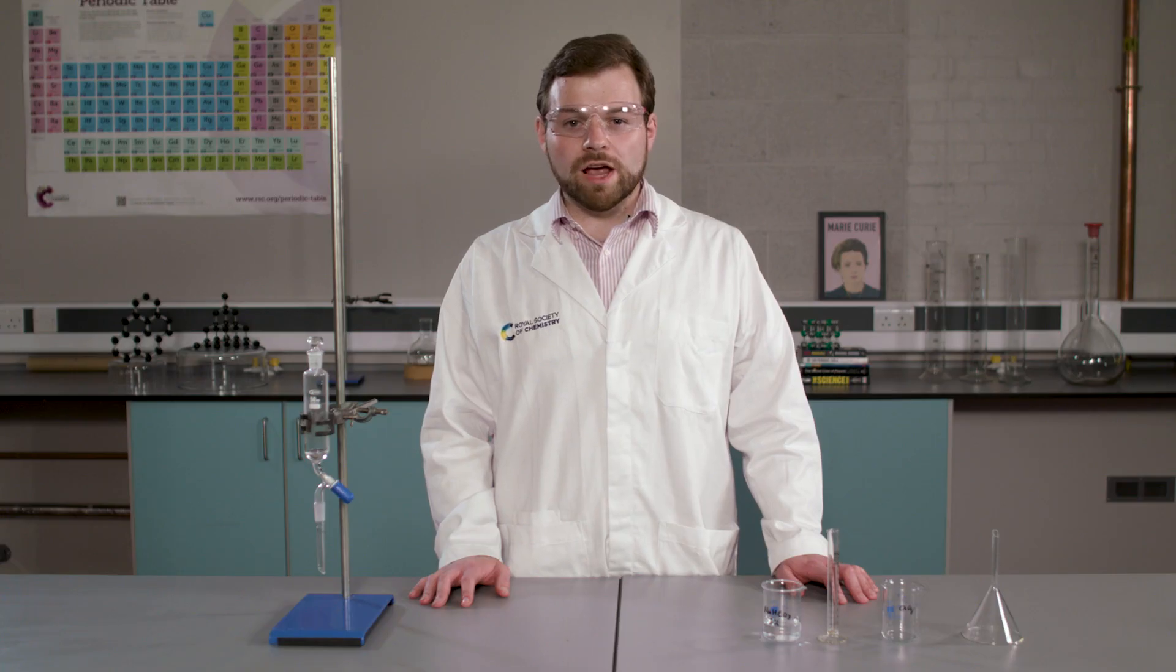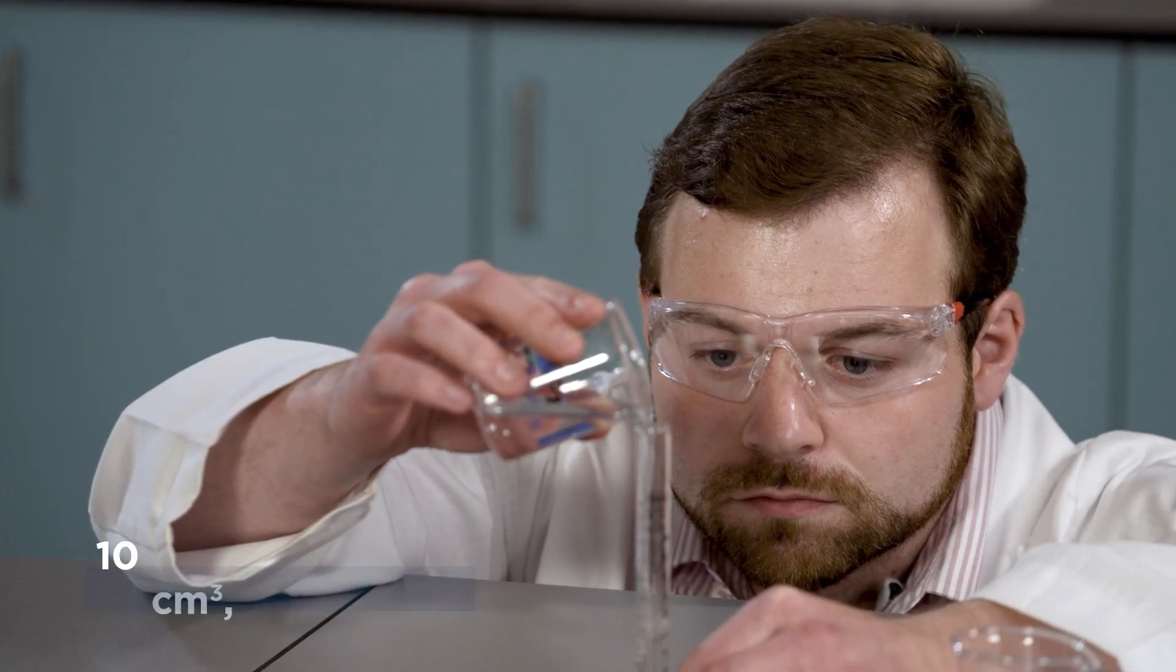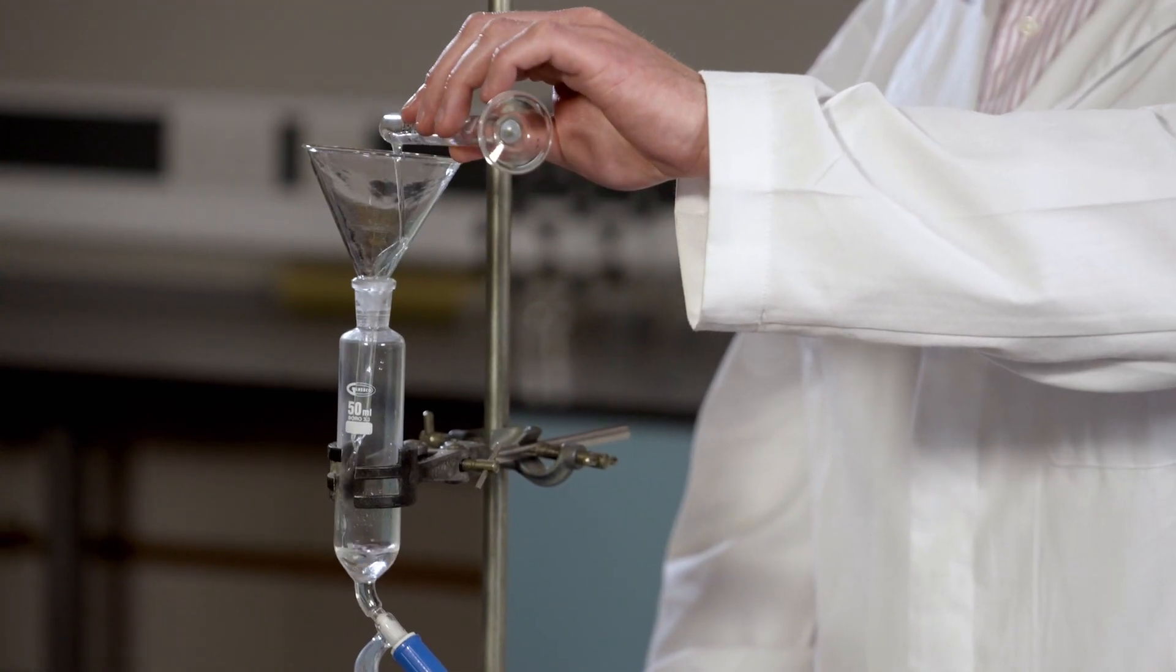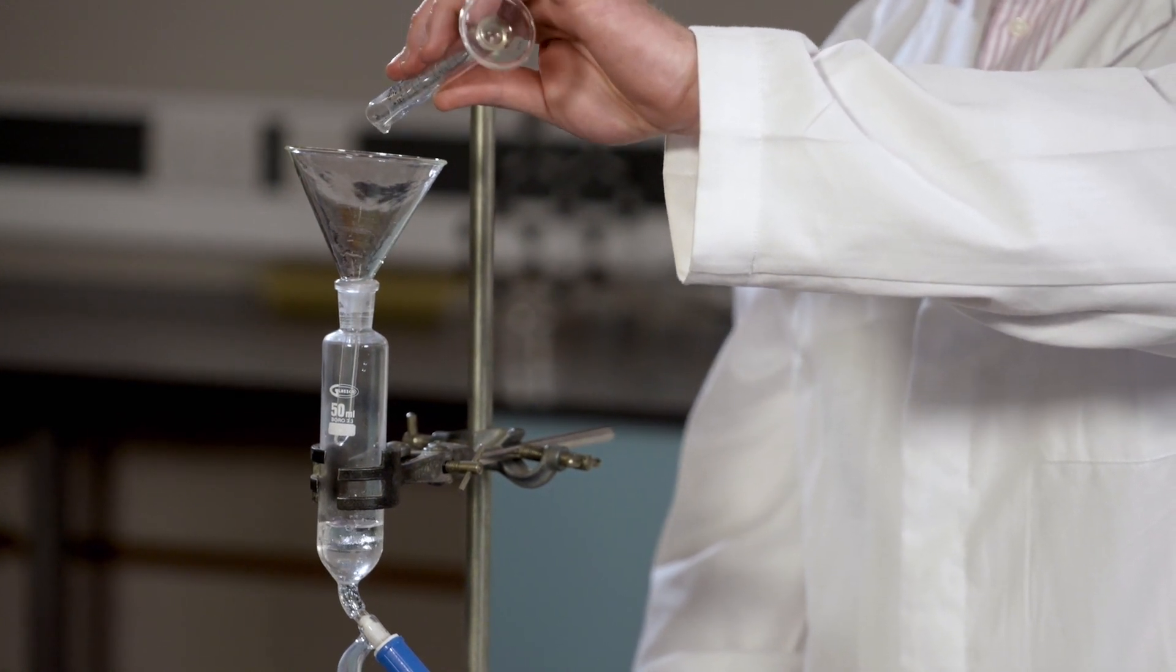There may still be unreacted hydrochloric acid in our sample. To remove this, we can react it with an alkali and separate it using a separating funnel. To do this, I'm going to measure out 10 centimeters cubed of sodium hydrogen carbonate solution and add it to our separating funnel. Note, I'm using a funnel every time I add a solution to our separating funnel.